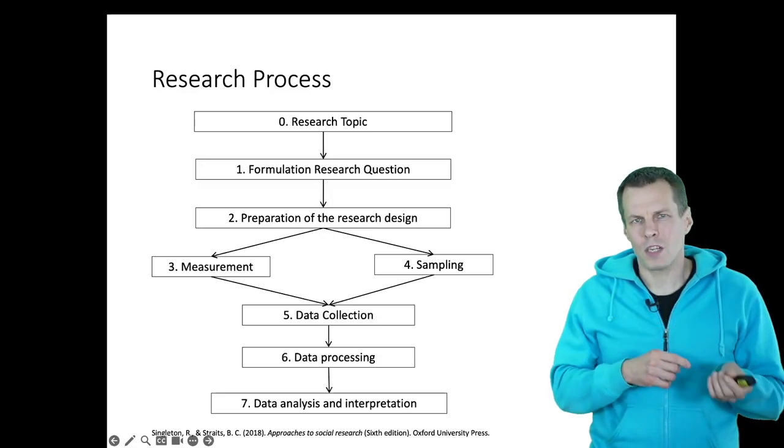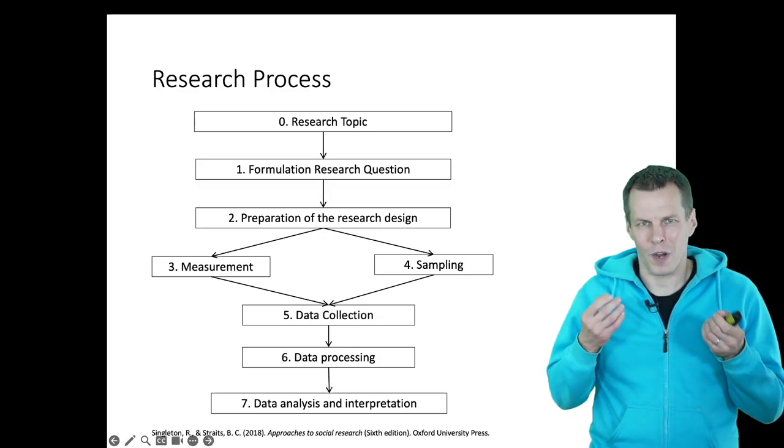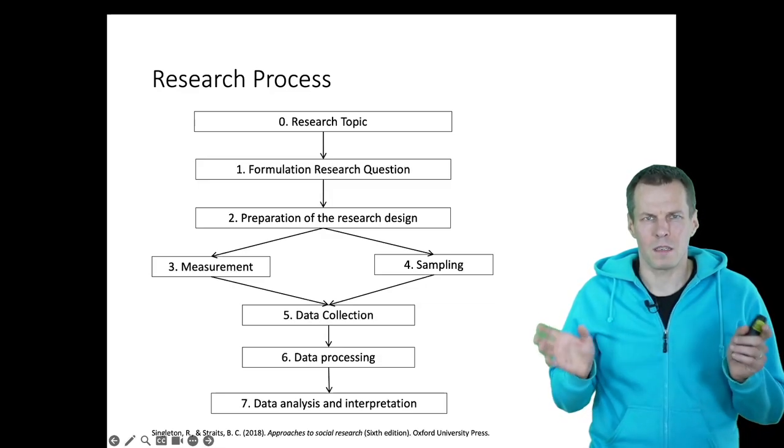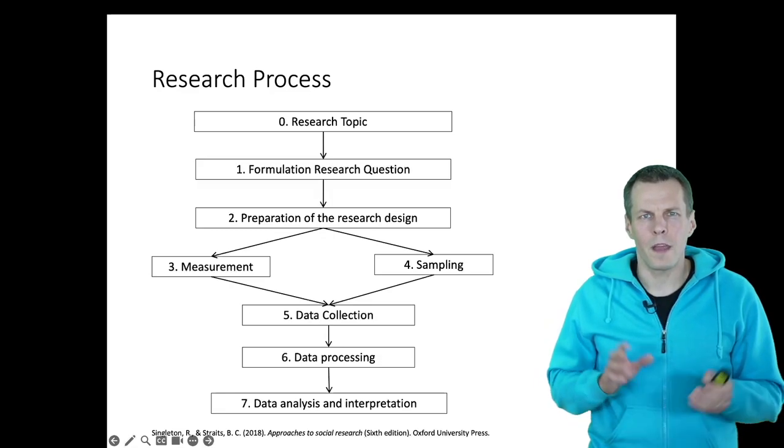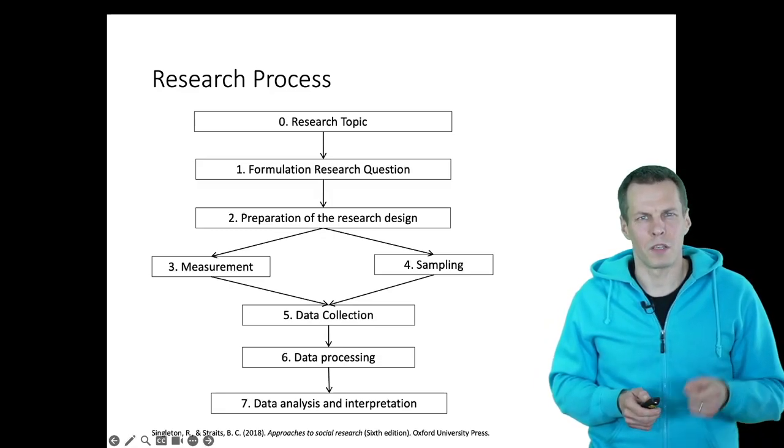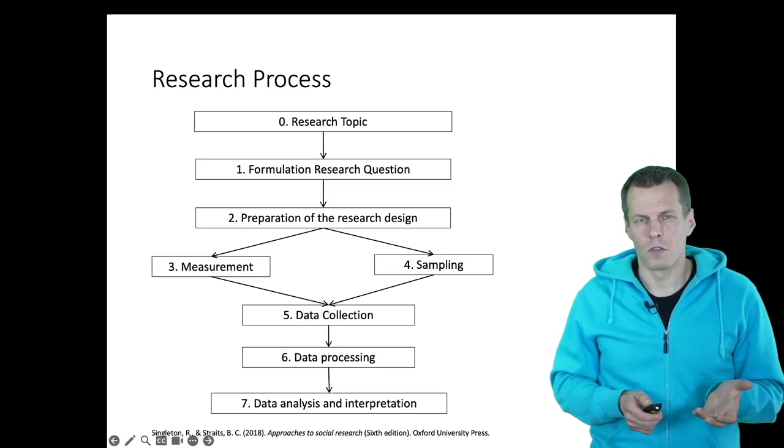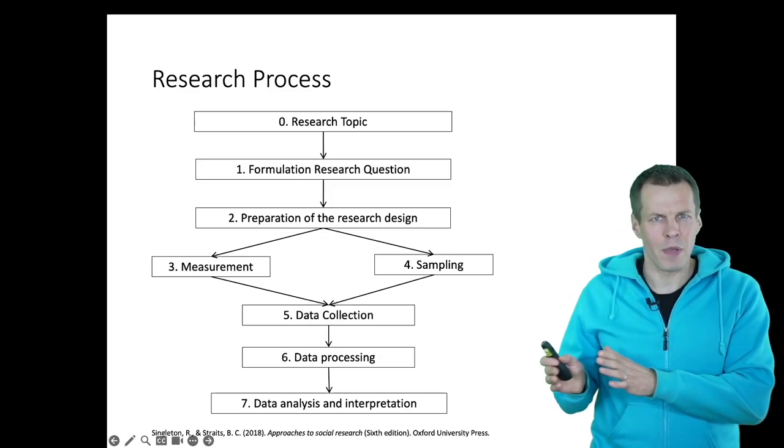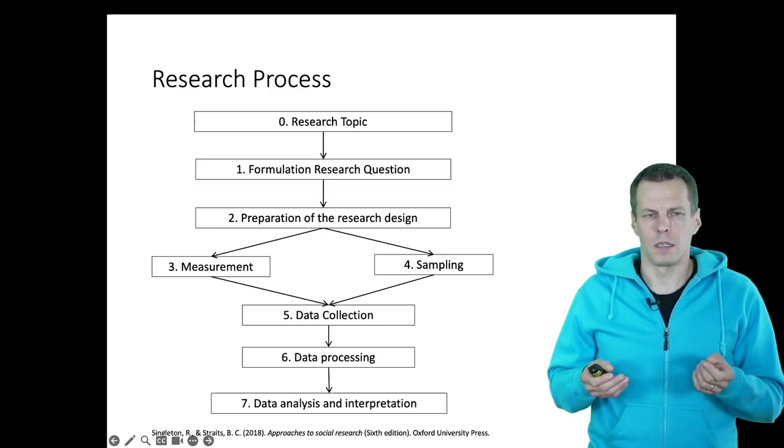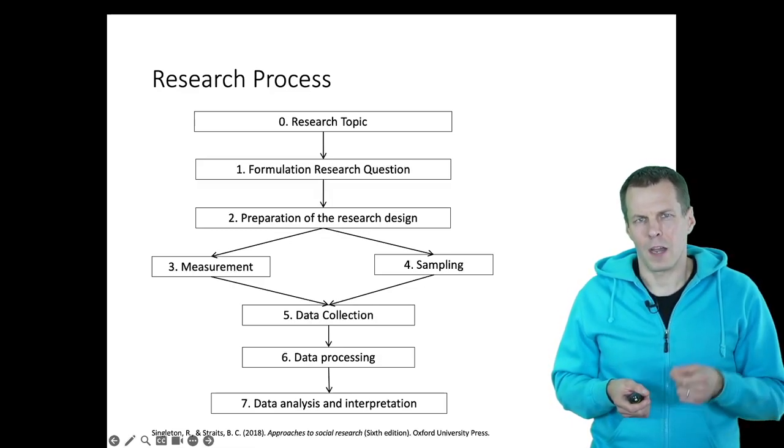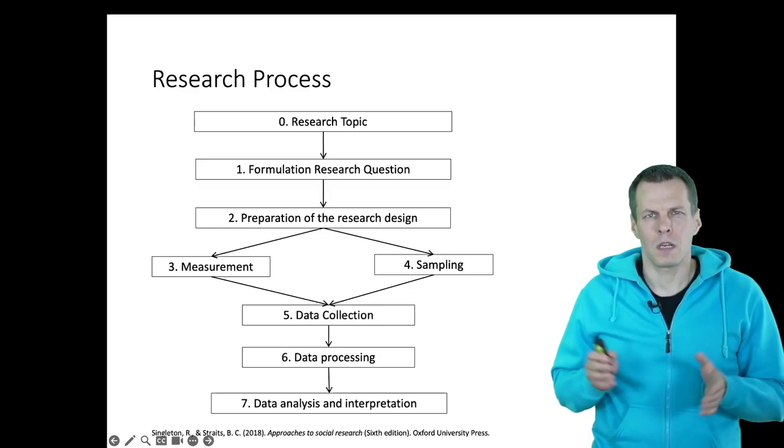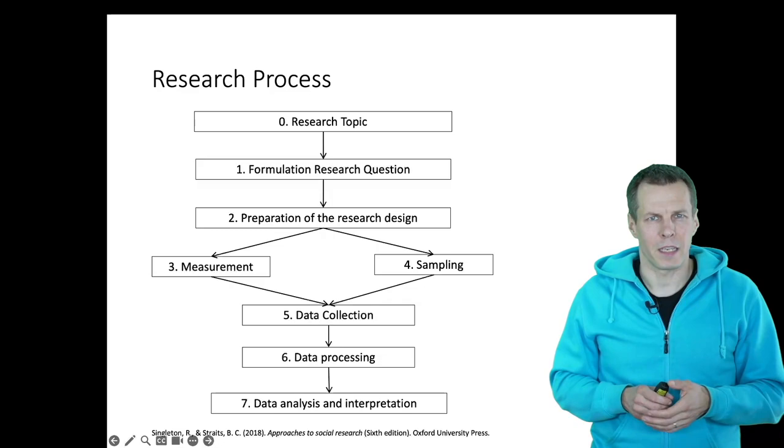Of course, measurement and sampling also concern the practicalities, like how do we actually go and collect the data. Then we collect the data. It can be with interviews, it can be a survey, we can do observations, we can get data from a database, and then follows the data processing and analysis. After analysis, we interpret the results and we write up the study. So this is how the research process is often explained.